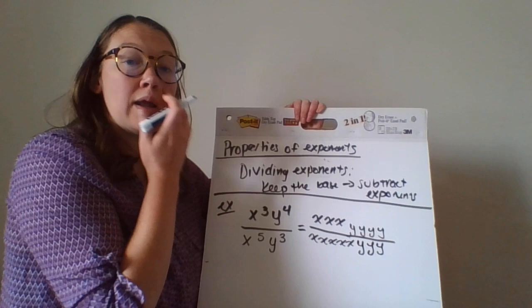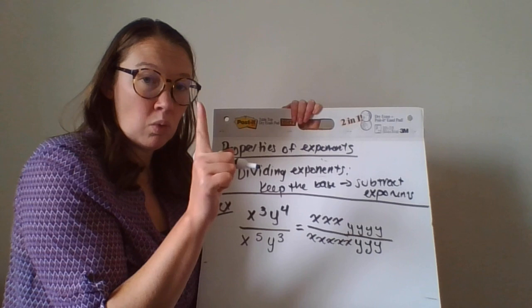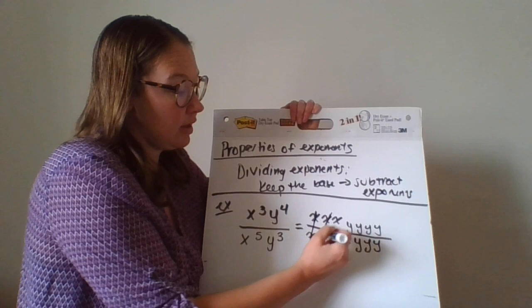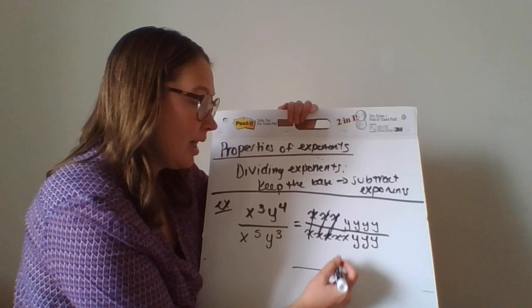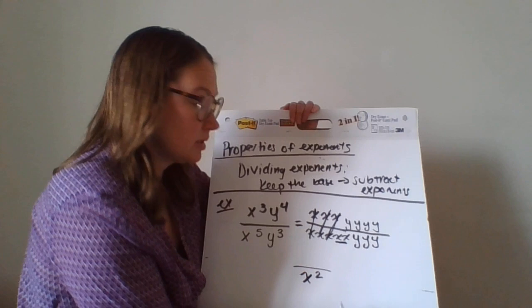So what I'm going to do is I'm going to cancel all the matches because x divided by x is 1. I'm going to mark all of these out with a 1. So there's a 1, there's a 1, and there's a 1. So on the bottom here, I'm left with two x's. So that's x to the second power.